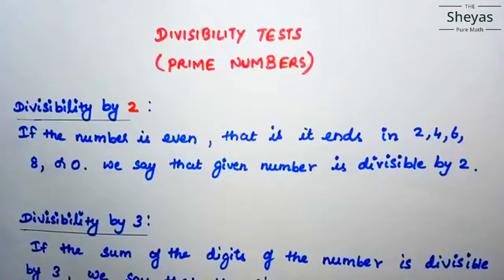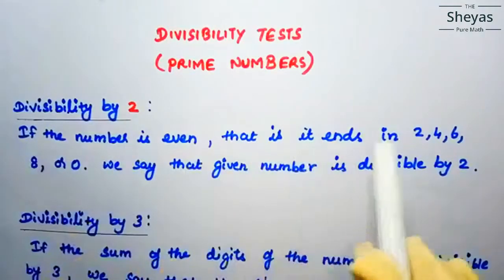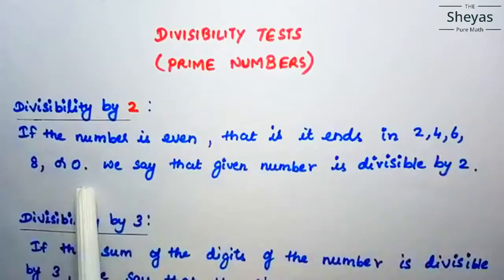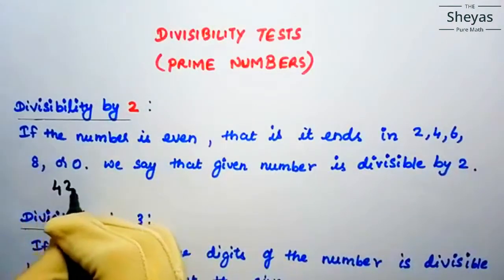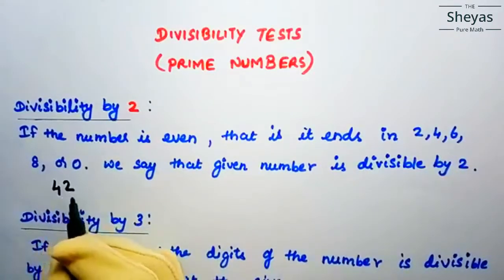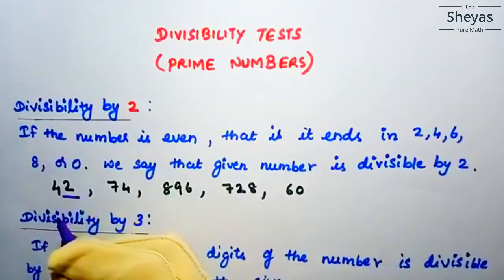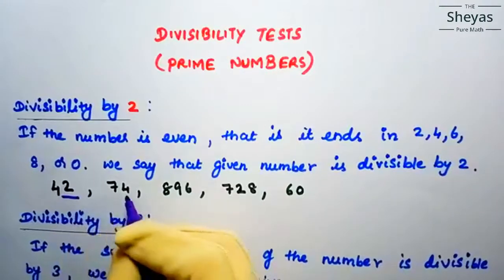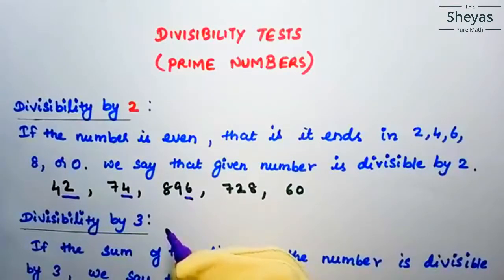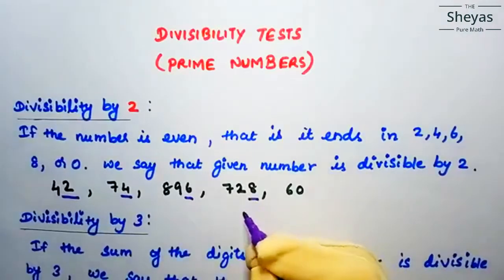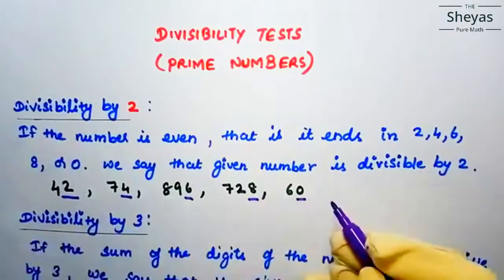Let us see some divisibility tests for prime numbers. Divisibility by 2: if the number is even — that is, it ends in 2, 4, 6, 8, or 0 — we say that the given number is divisible by 2. For example, 42 ends with 2, so it is divisible by 2. Similarly 74 ends with 4, another number ends with 6, another ends with 8, and 60 ends with 0 — so all these numbers are divisible by 2.